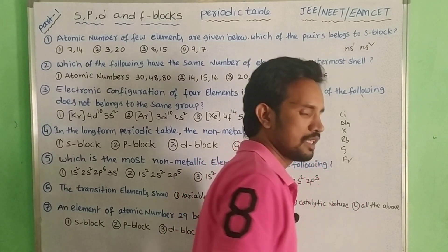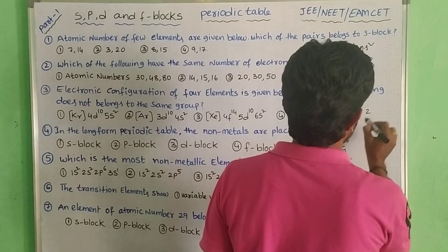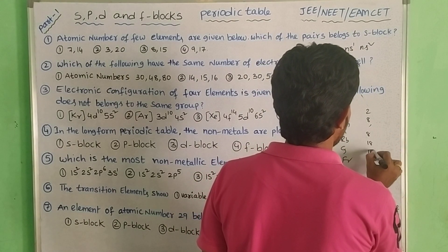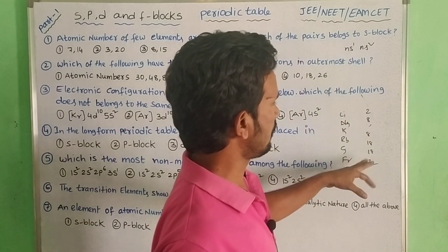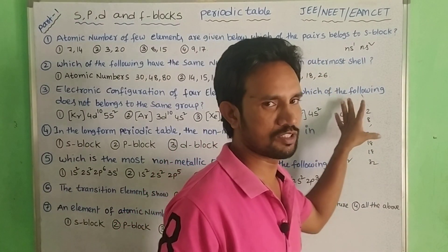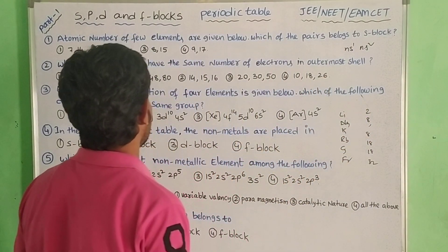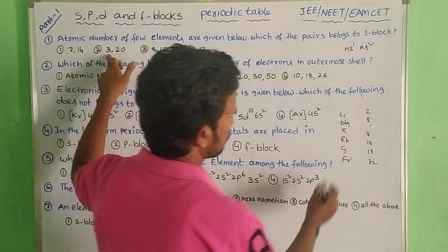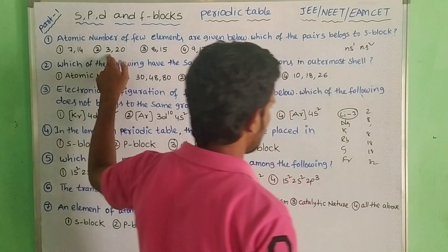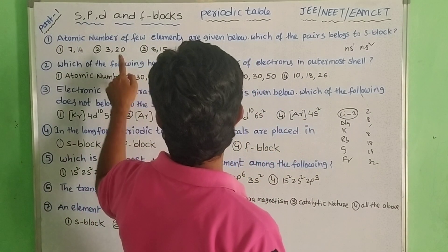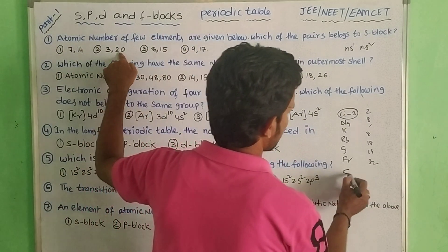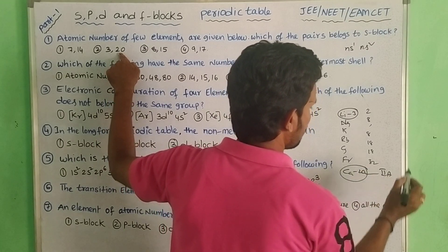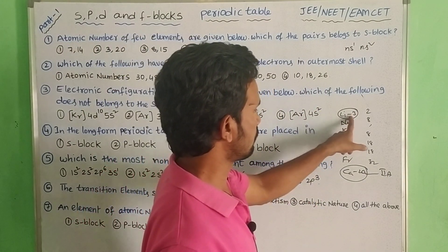Group 1A is Lithium, group 2A is Calcium. Calcium has atomic number 20 and belongs to group 2A. So in S-block the answer is Lithium and Calcium — atomic numbers 3 and 20. Lithium is group 1A and Calcium is group 2A, both are S-block elements. So that is the answer.